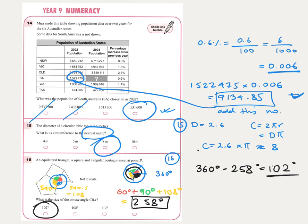A quick note about why the pentagon's interior angle sum is 540: you can divide a pentagon into triangles from one vertex — this creates three triangles, and since each triangle has angle sum 180, three times 180 equals 540. That's how you figure it out for any polygon. Thanks for watching and I'll see you soon — bye!